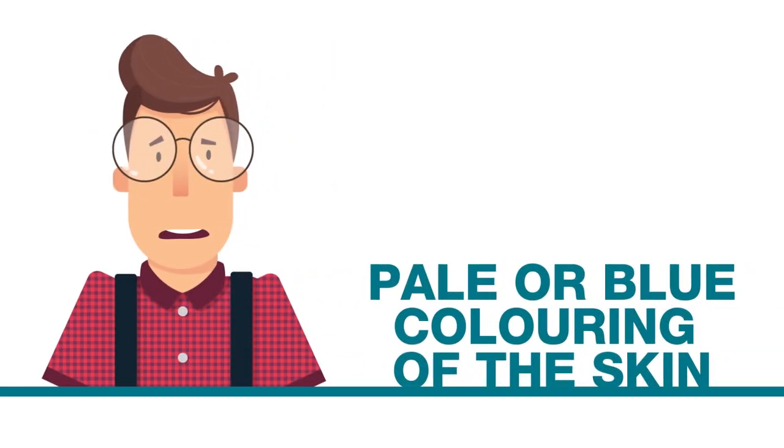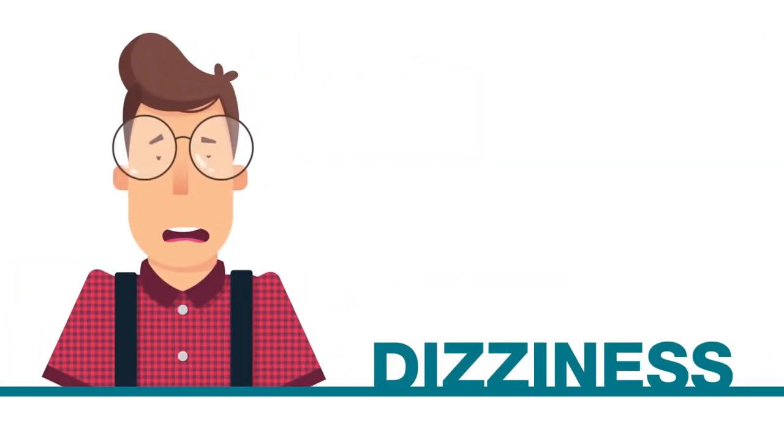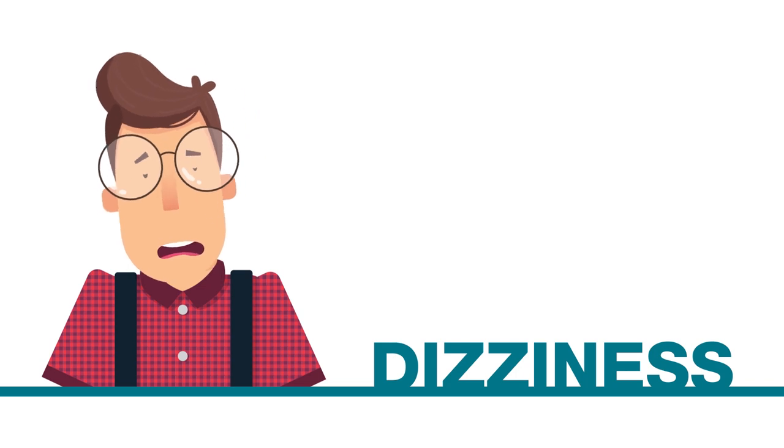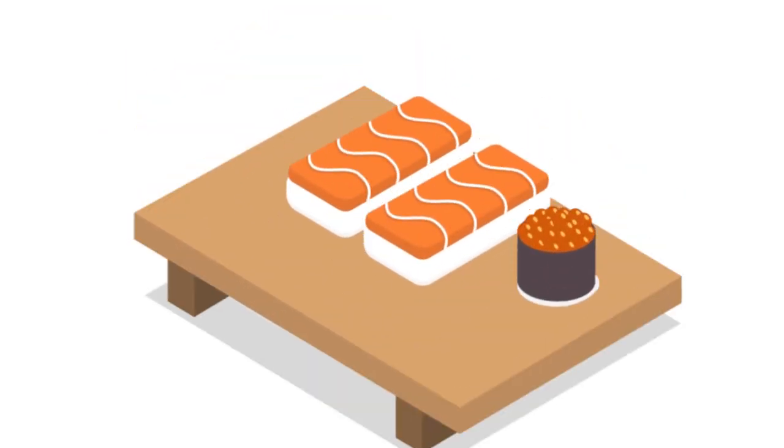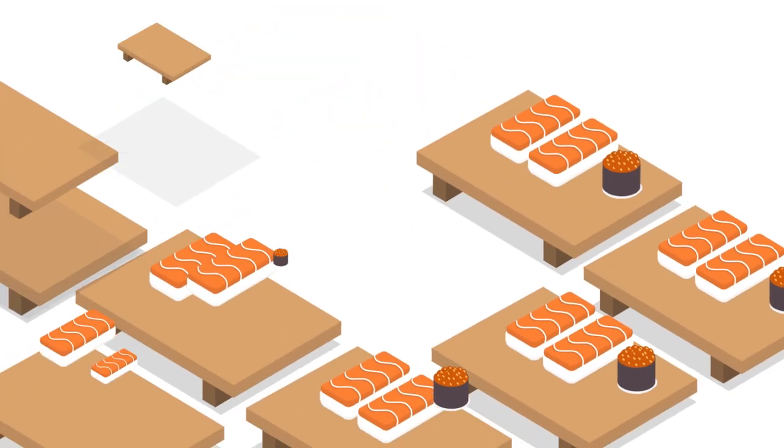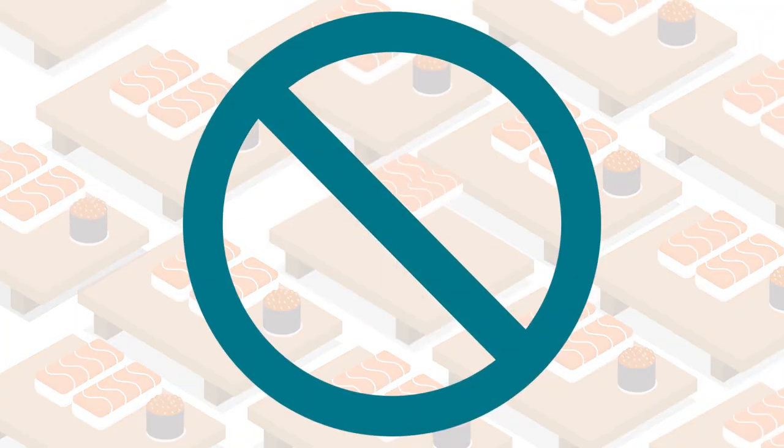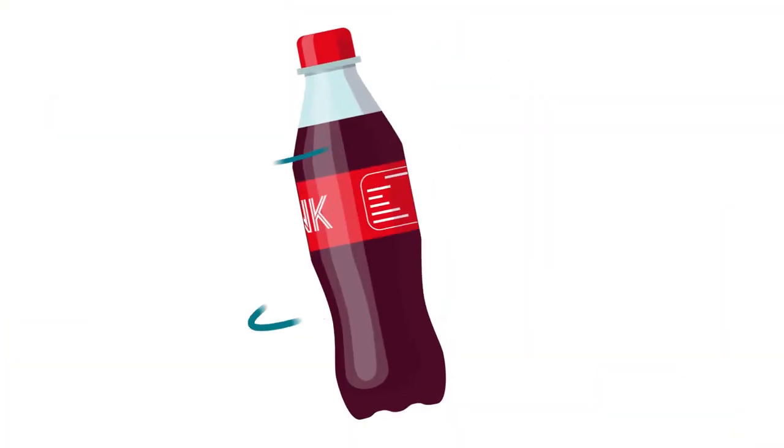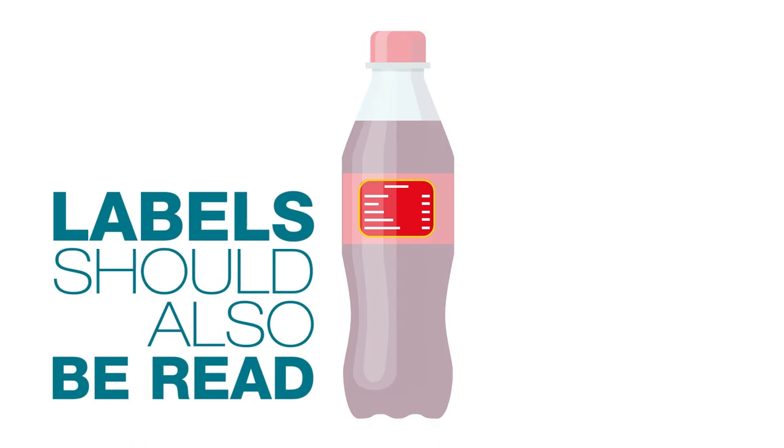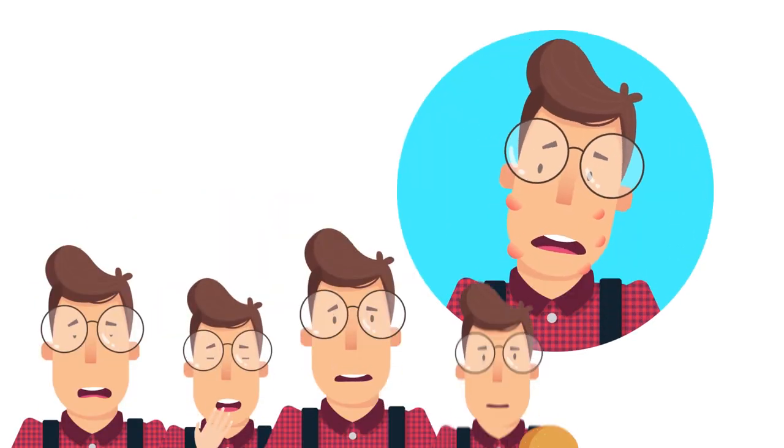Other symptoms include yellow or blue coloring of the skin and dizziness or feeling faint. The best way to prevent an allergic reaction is to avoid foods that cause symptoms. Food and drink labels should also be read very carefully.